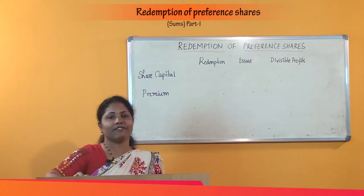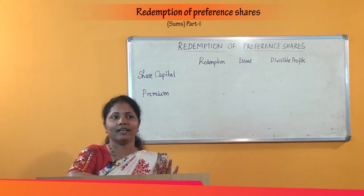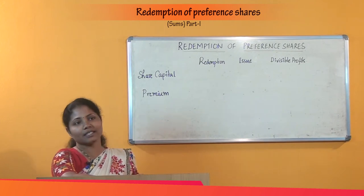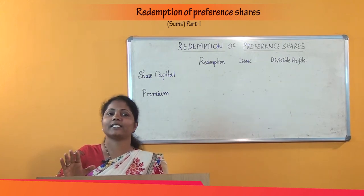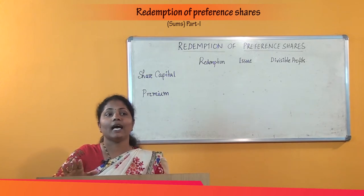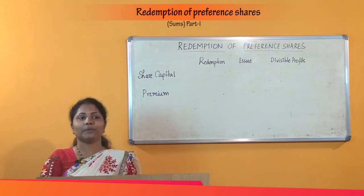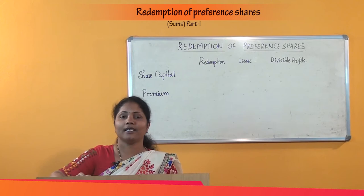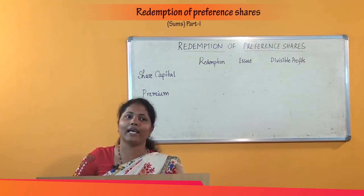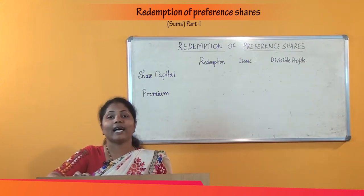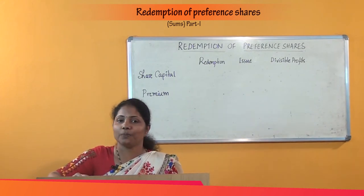Let us see which are the items given in this question. Preference share capital of Rs. 5,00,000 is to be redeemed at a premium of 20%. 25,000 equity shares of Rs. 10 each at a premium of 50% are issued for redemption. Also, 10,000 10% debentures of Rs. 100 each are issued for redemption. Fixed assets costing Rs. 1,00,000 are sold for Rs. 80,000. The profit and loss account balance is Rs. 1,50,000 and general reserve is Rs. 2,00,000.